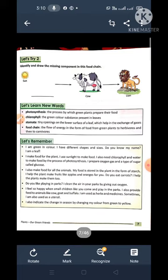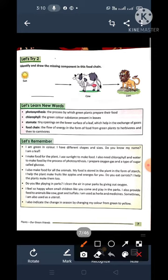Let's try 2. First we will do, let's try 2. In this what you have to do is that identify and draw the missing components in this food chain. This is a food chain. So what should come here in this blank? What should come? What diagram you have to draw?